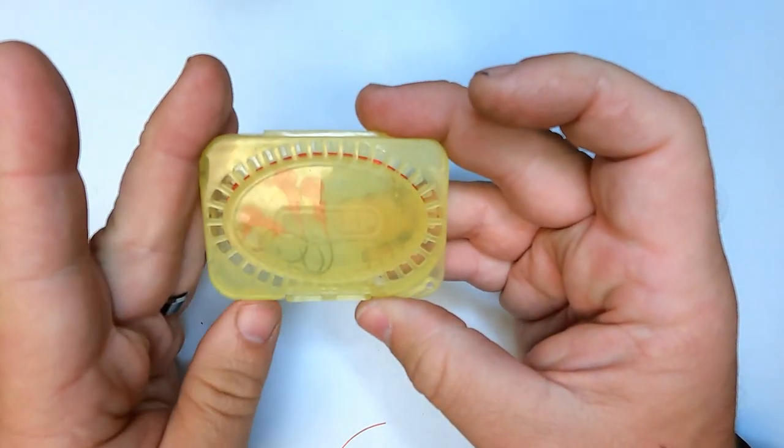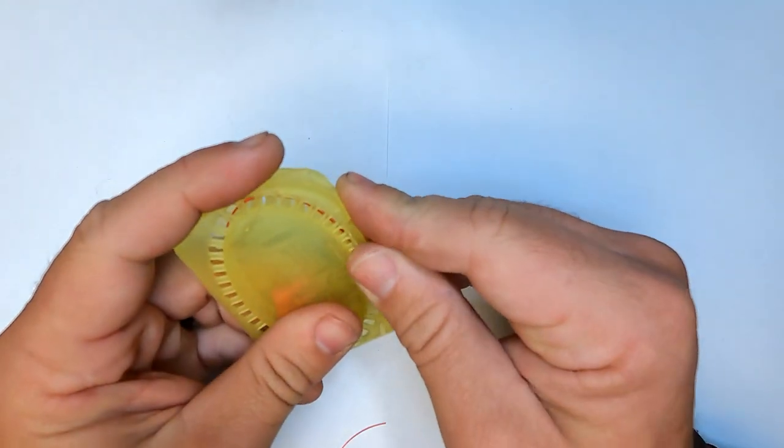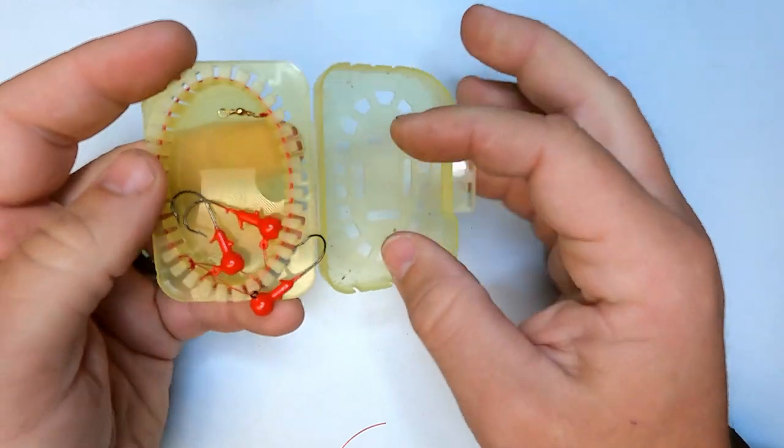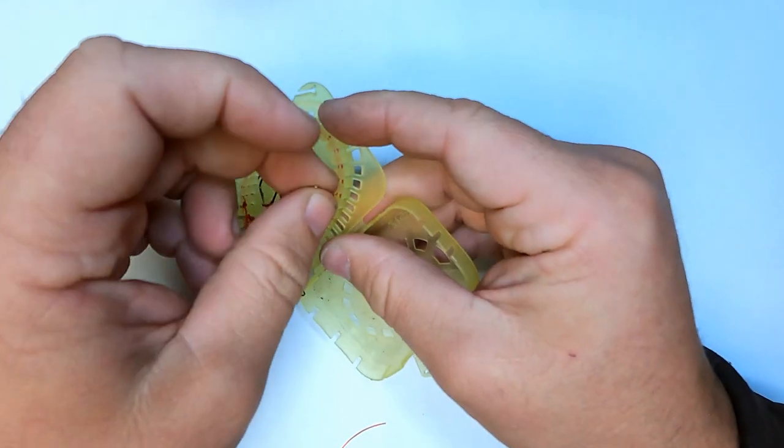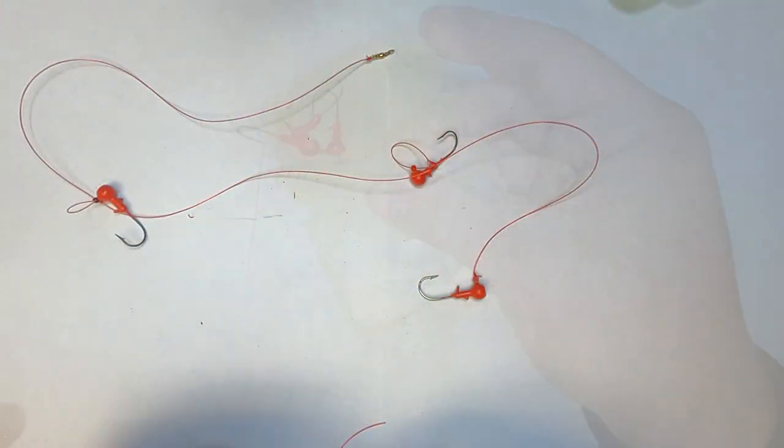And guys, if I know I'm going skipjack fishing, I'll usually tie me a half dozen or so of these things with different weights of jig head. That way, no matter what the current's doing when I get down there, I can usually get a hold of some fish. Alright guys.